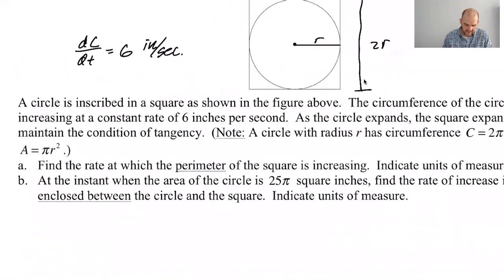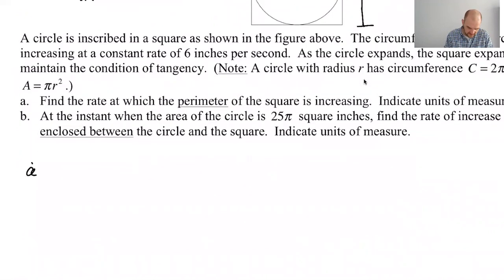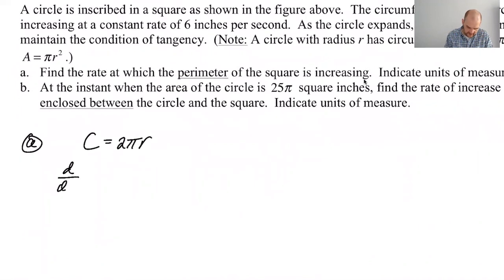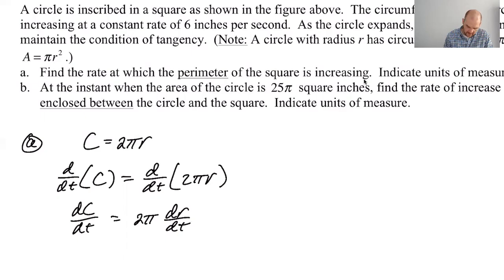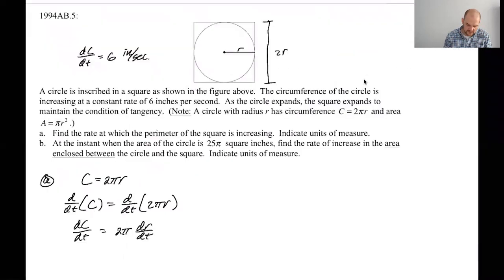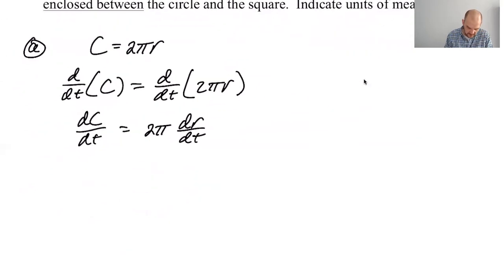All right. So I know the rate of change of circumference. And for some reason they told me this, but I happen to know the circumference of a circle is 2πR. So if I take the derivative with respect to time of both sides of this, that'll give me dC/dt is 2π dr/dt. And then I know that dC/dt is 6 because that was given to us in the stem of the question. So 6 equals 2π dr/dt. So dr/dt is 3 over π, which it would have to be for there to be no π in the rate of change of the circumference.